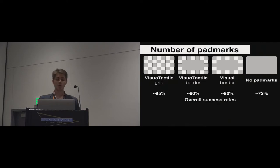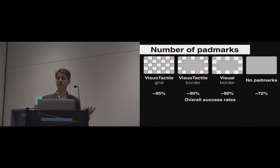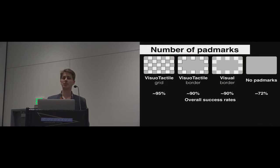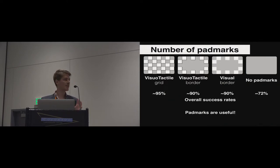We found that for the first condition, we could reproduce the results from the first experiment. For the two conditions with pad marks only on the border, accuracy was about 90%. And finally, without pad marks, it was about 72%. The main result is that pad marks are useful. With a lot of possible gestures, users need the marks to be guided.